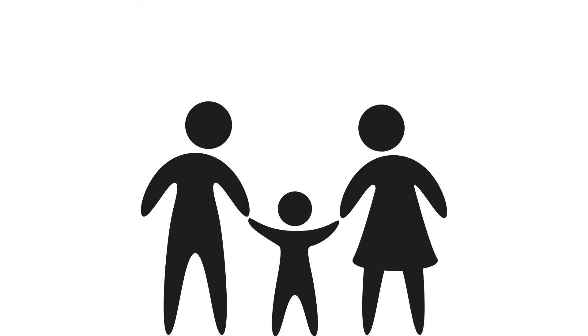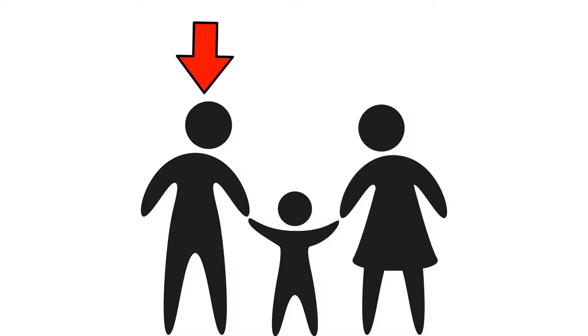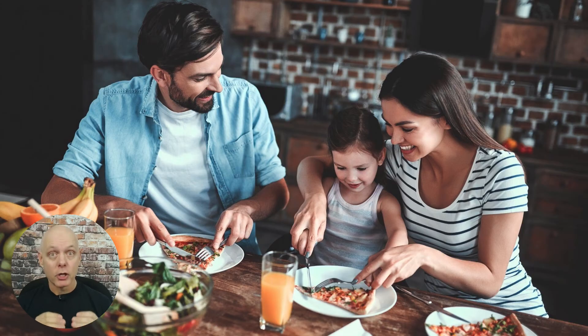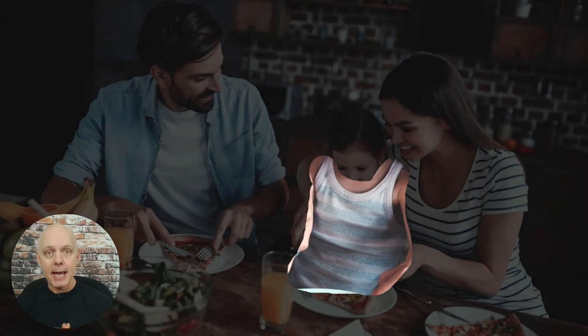This girl is the daughter. You know the mother, the father, and the daughter. The man and the woman are the child's parents. The girl is the daughter. She is much younger than her parents. The daughter is wearing a tank top. The tank top is like a t-shirt, but with no sleeves — it just has straps over the shoulders.